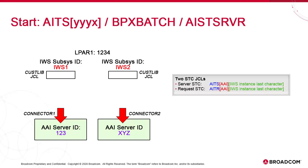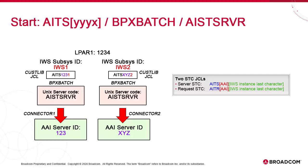The instance procedure is a JCL called AITS followed by four characters — the three-character AAI instance ID and the last character of the IWS subsystem name. As a result, the first JCL is called AITS1231, while the second is AITSXYZ2. To start the instance, we simply execute this JCL. It invokes BPX batch and starts the USS environment. It also passes a UNIX executable AIST SRVR, which is the server STC code. The instance starts.